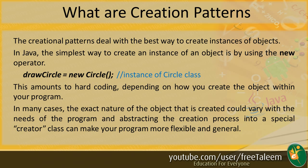First of all, we need to see creation patterns. When you do some programming, it is very normal that you have to create a new object. For this object you can use the new operator. The problem is that you have to fix your program to a certain class of object — it is fixed, it is hardcoded.